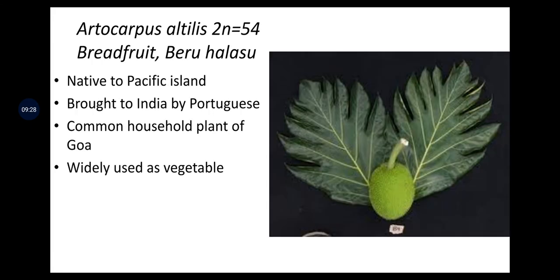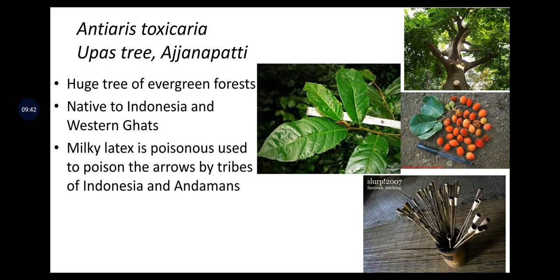Artocarpus altilis (2n = 54) is breadfruit or Beru Halasu, native to Pacific Islands and brought to India by the Portuguese. It is a common household plant in Goa, widely used as a vegetable. Antiaris toxicaria is the upas tree or Ajanapatti — a huge tree of evergreen forests native to Indonesia and the Western Ghats. Its milky latex is poisonous and was used by tribes of Indonesia and the Andamans to poison the tips of arrows to kill forest animals.